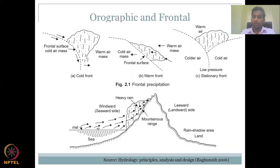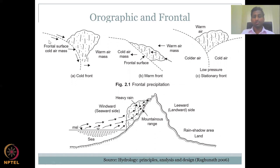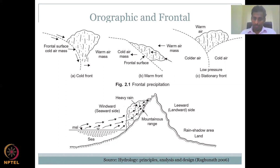Let us look at some images for better clarity. In part A, from the prescribed book for this course, we look at orographic and frontal precipitation — the two major methods through which precipitation can occur in rural India. In the frontal image, a cold air mass is moving in and the warm air gets lifted up. That upward movement causes it to cool down further, and then rain occurs. That is how precipitation is formed.